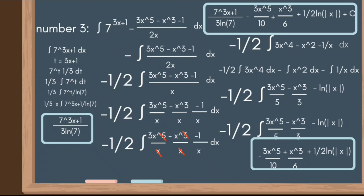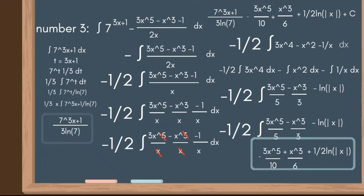Now that we have all the integral answers, we sum them up and add the constant. Our final answer for number three is 7^(3x+1)/(3·ln(7)) - 3x⁵/10 + x³/6 + (1/2)ln|x| + C.